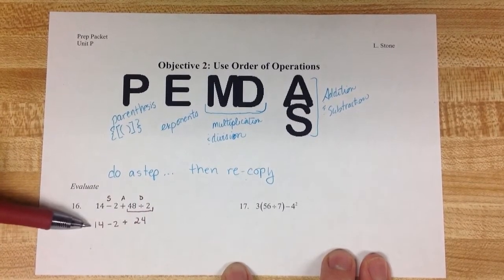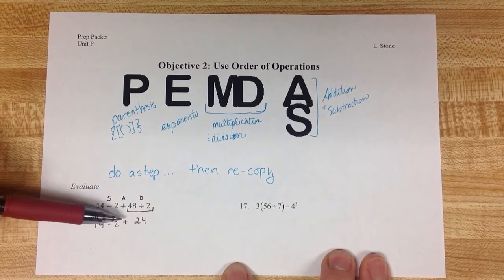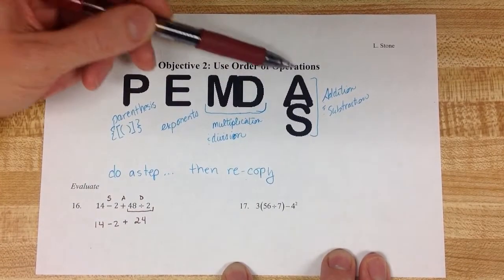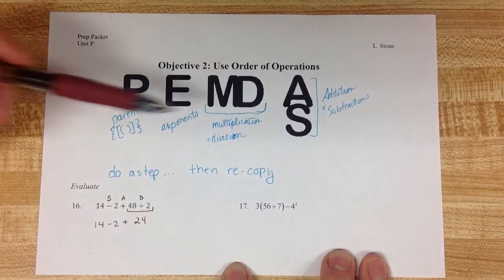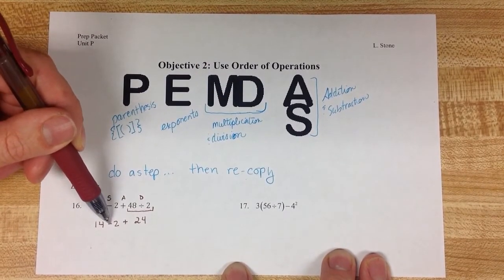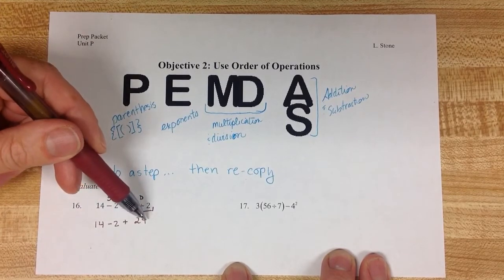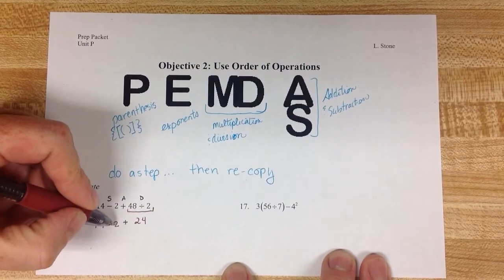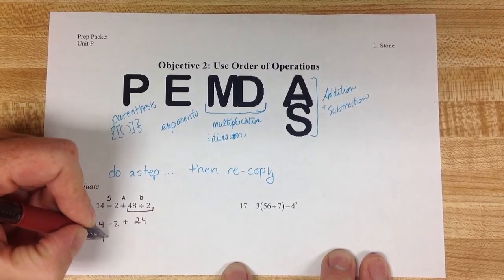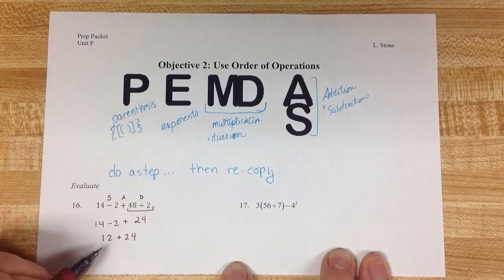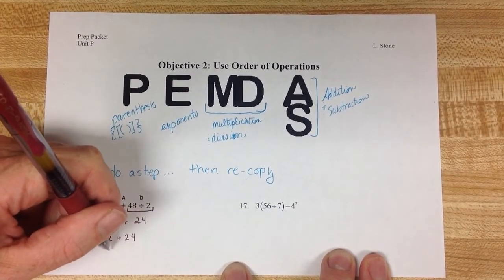Now I'm looking through my new problem. All that I have left to do are subtraction and addition. And this is why the AS is written as a single step, because we're going to do the subtraction first, because it's the first thing we're seeing reading from left to right. And these are considered to be a single step. So 14 take away 2 gives me 12. Then I add the 24. And 12 plus 24 gives me 36.